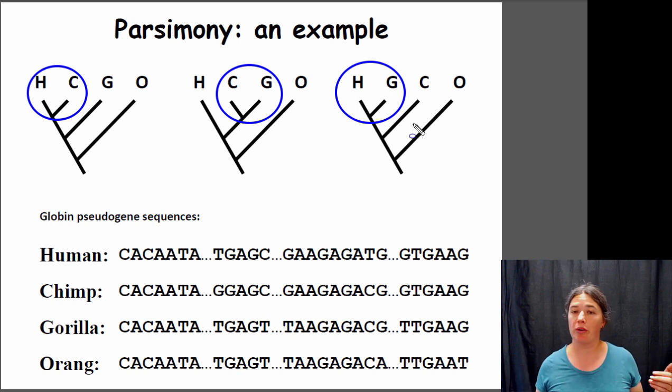Those are your three possibilities, and those are the only three possibilities if you're using orangutans as the outgroup and you only have three species in your ingroup. These are our three trees. So how do we tell which tree is right, or which tree has the best support?